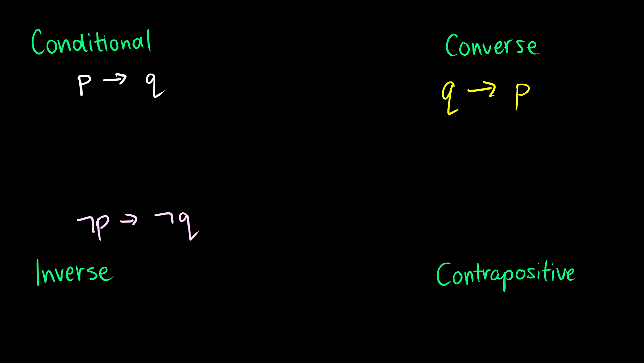Finally, the contrapositive is doing the converse and the inverse — flipping the order and putting a negation before each proposition. So for P arrow Q, the contrapositive is not Q arrow not P.